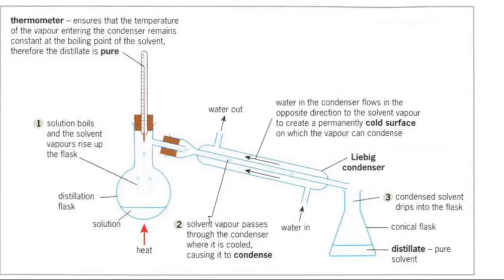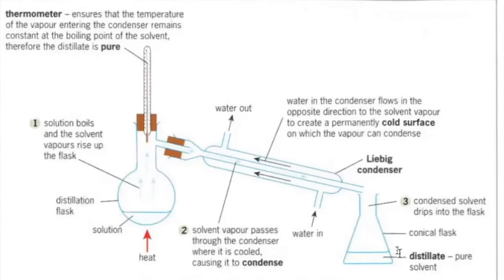So the solvent vapor passes through the condenser where it is cooled, causing it to condense. Water in the condenser flows in the opposite direction to the solvent vapor to create a permanently cold surface on which the vapor can condense. And then the condensed solvent drips into the flask. This is our conical flask and our solvent that we're collecting is pure and it's called a distillate.